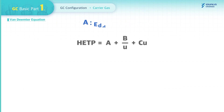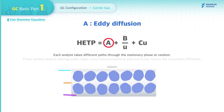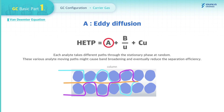Let's find out each term's band broadening mechanism. First, Term A — Eddy diffusion. Eddy diffusion describes how each analyte takes different paths through the stationary phase at random. These various moving paths of analytes cause band broadening and eventually reduce separation efficiency.